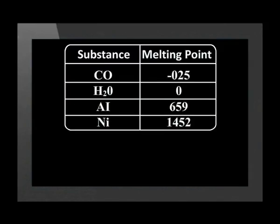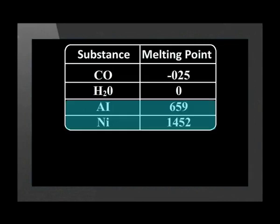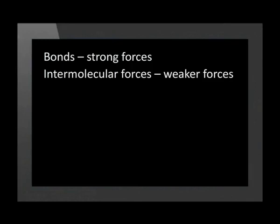If we compare covalently bonded substances with the melting points of metals, we see that the metals have much higher melting points. To melt substances composed of small molecules like water, we need to separate the molecules and overcome intermolecular forces. But to melt metals, we need to break up the metal lattice — that means breaking bonds. Remember that bonds are much stronger than intermolecular forces.